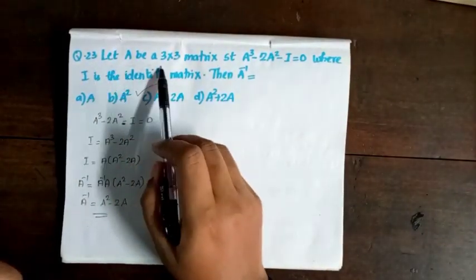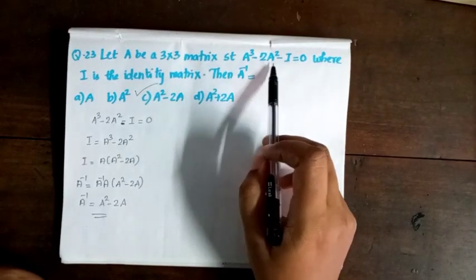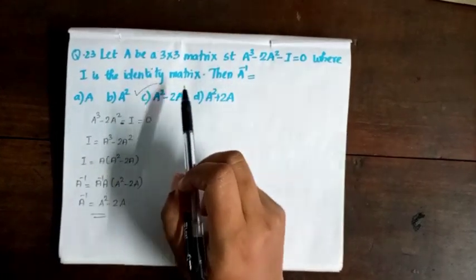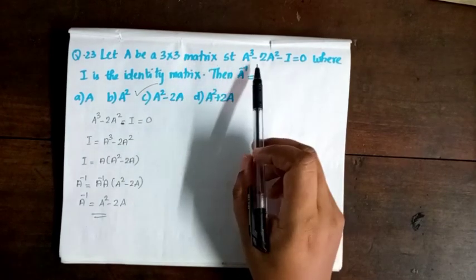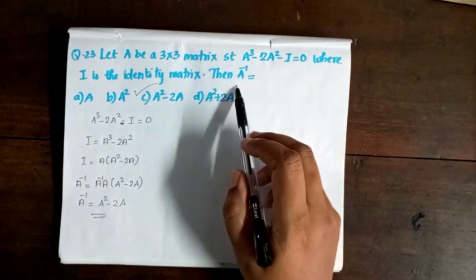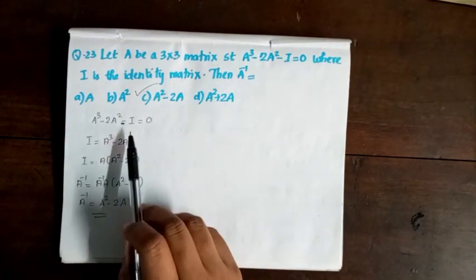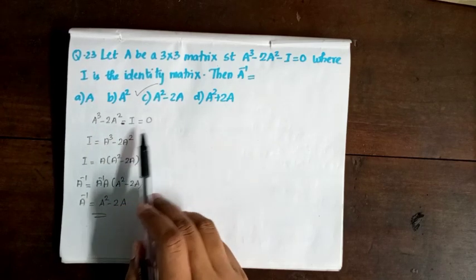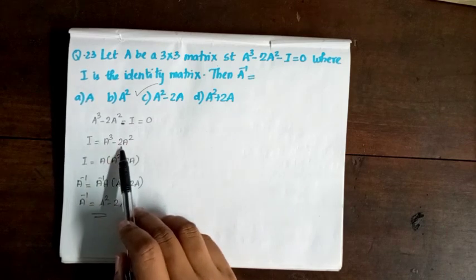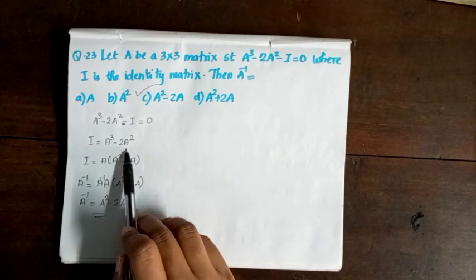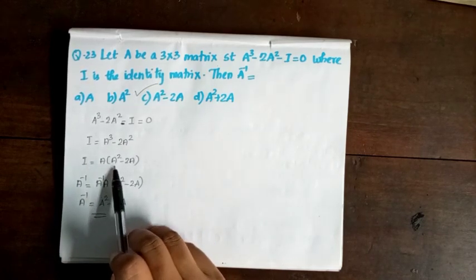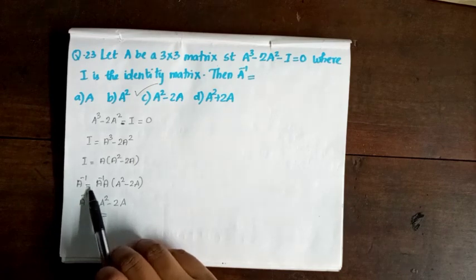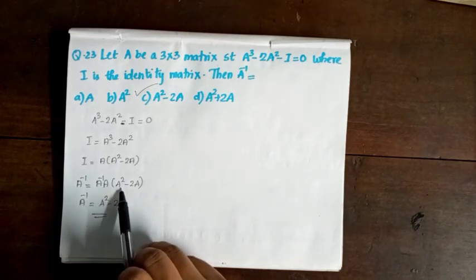Next question, 23. Let A be a 3×3 matrix such that A³ - 2A² - I = 0, where I is the identity matrix. Then A inverse is? This implies I = A·(A² - 2A), so A inverse = A² - 2A.